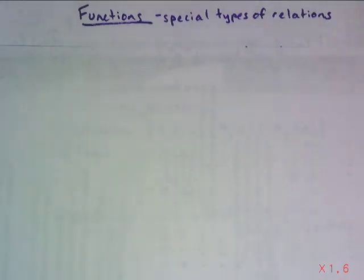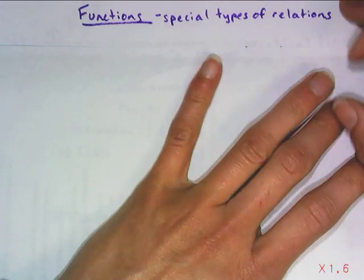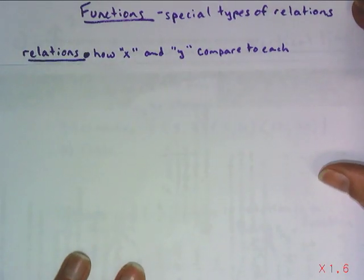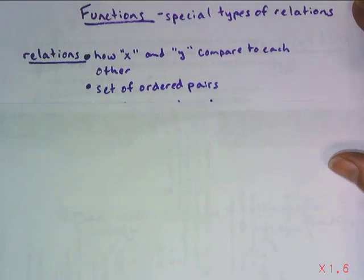Today's video is identifying functions which are just special types of relations. So a relation is just simply how x and y compare to each other. Another way to think about it is it's a set of ordered pairs.